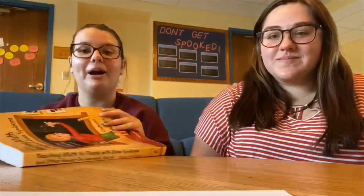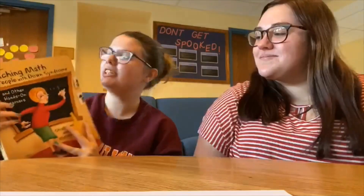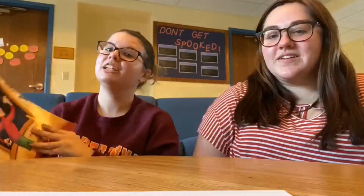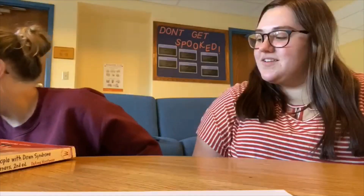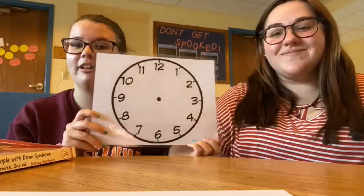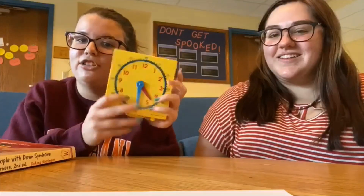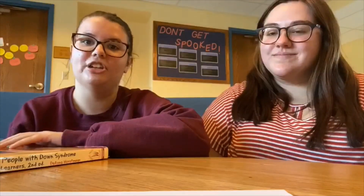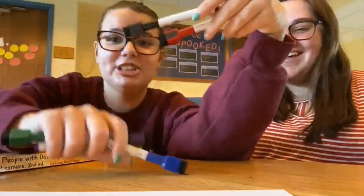Jenna and I today are going to be co-teaching a classroom lesson about clocks. We're going to use the resource 'Teaching Math to People with Down Syndrome,' specifically chapter 12 on time and measurement. Today we're just going to be focusing on learning about the short hand or the hour hand. Our materials today are going to include our own classroom clock, little individual clocks for the students, a schedule for students to look at, whiteboard markers, and the whiteboard.